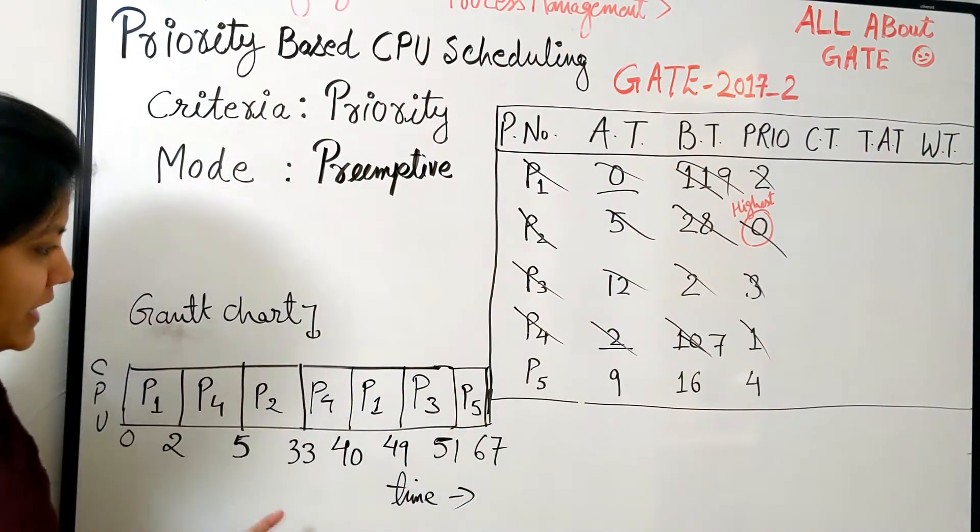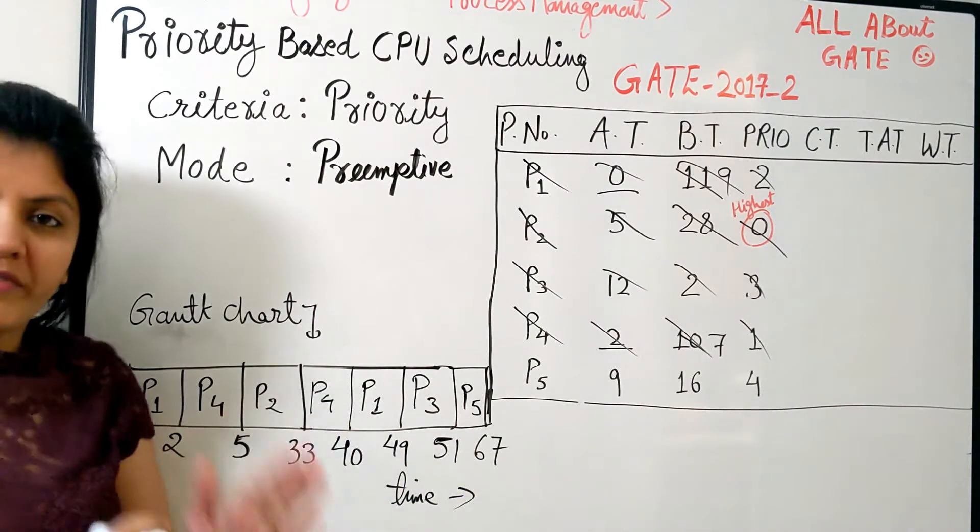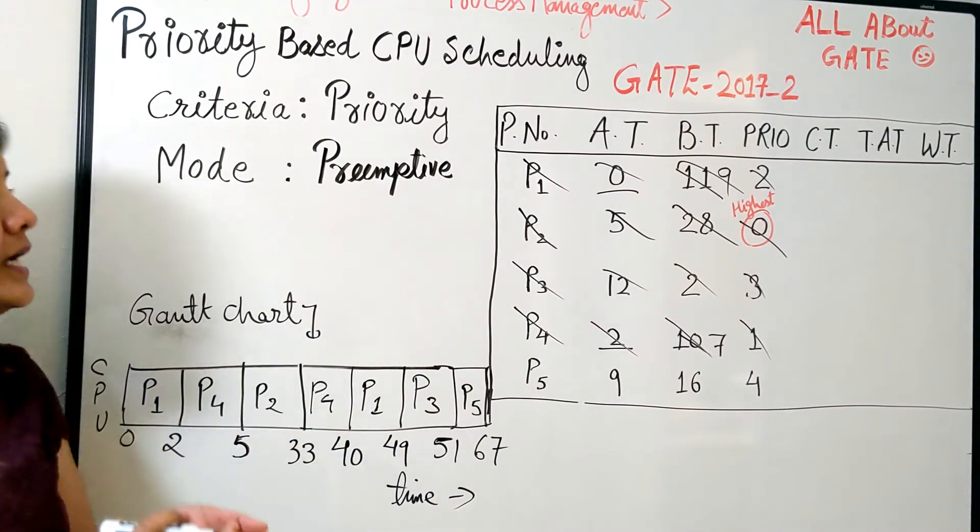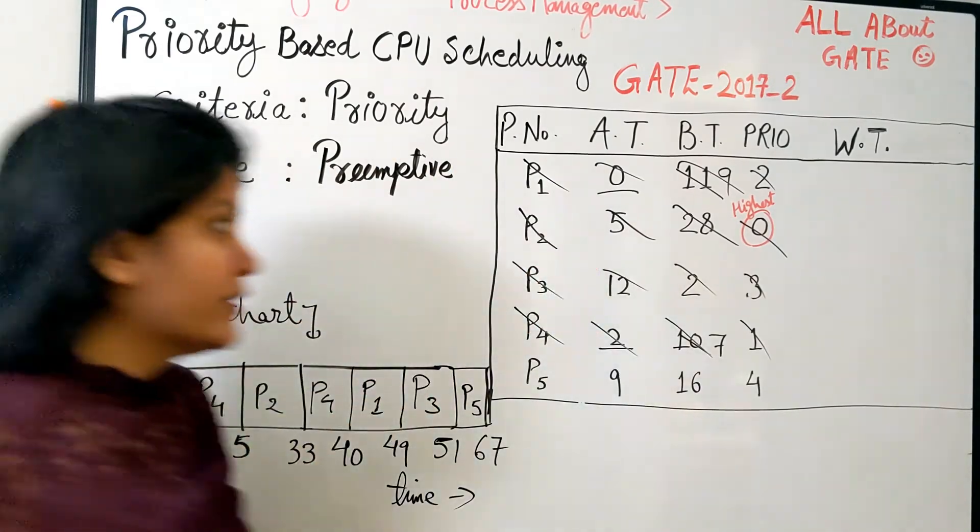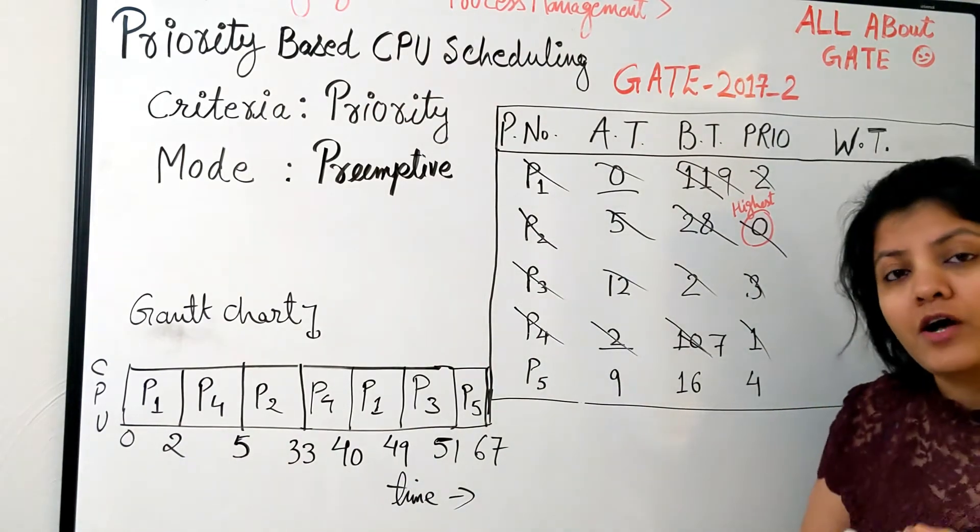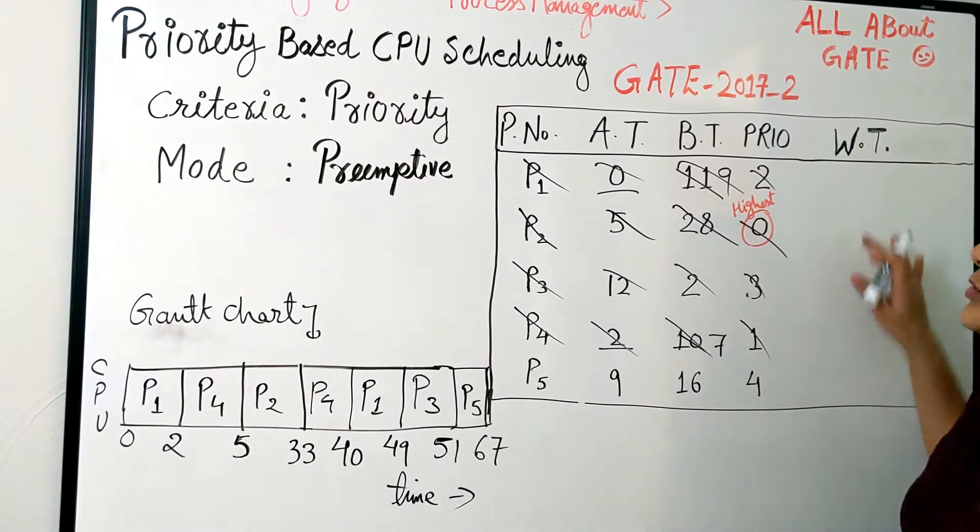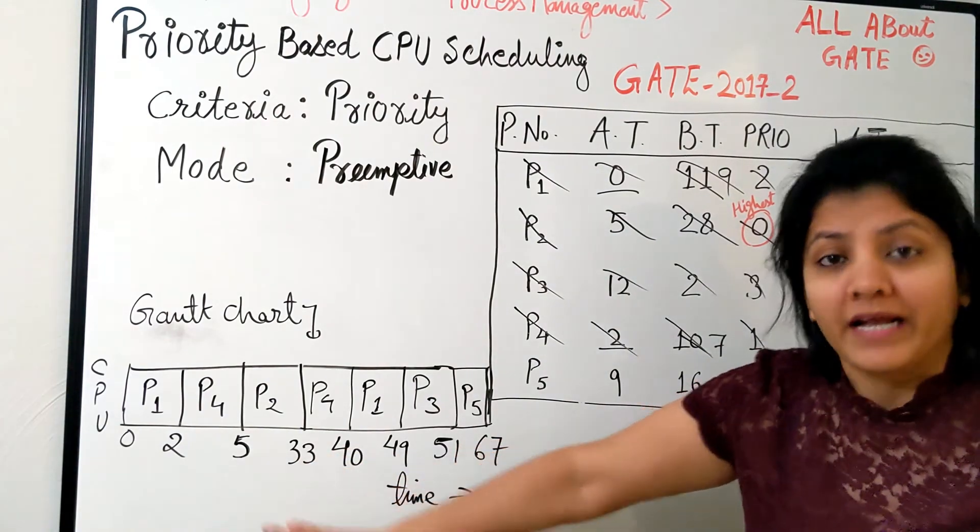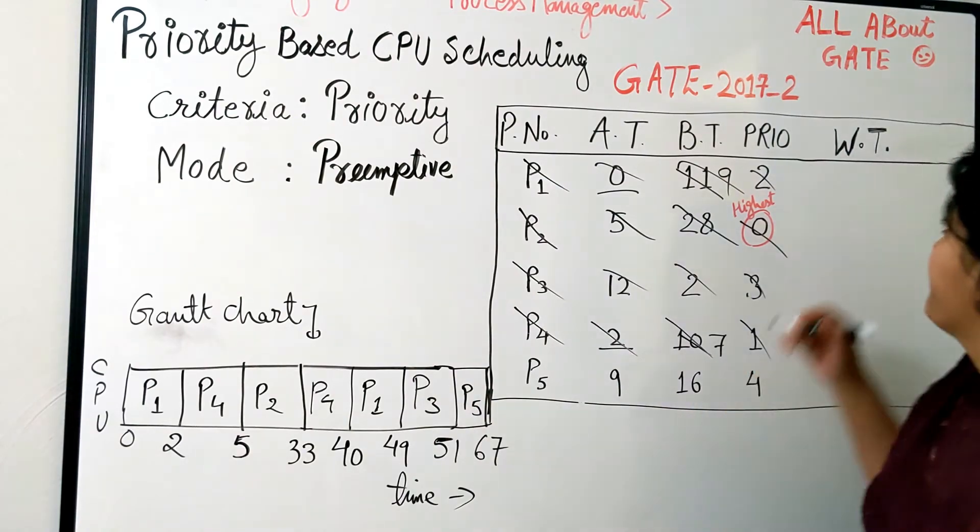So this is how the scheduling is going to work, and this becomes your Gantt chart. We scheduled all the processes one by one and you have seen how and where the preemption takes place. Because the question is asking the average waiting time, let's quickly get the waiting time. There are two ways: you can find out the completion first, then the turnaround, and then turnaround minus burst becomes the waiting time.